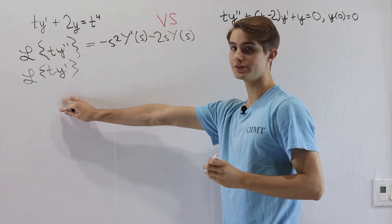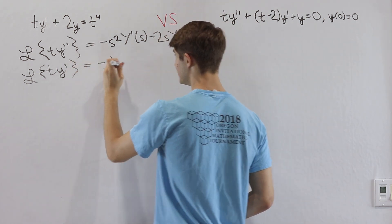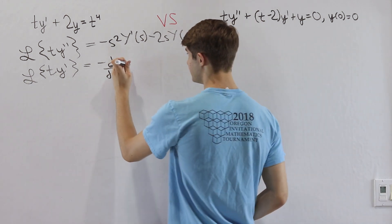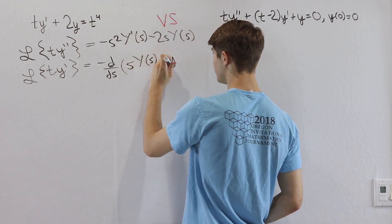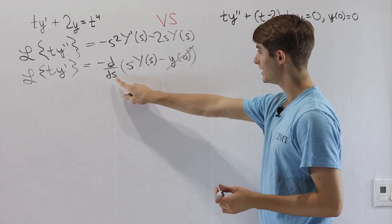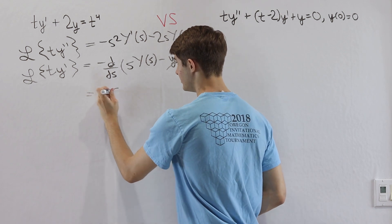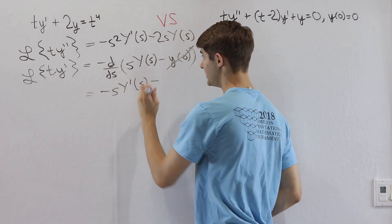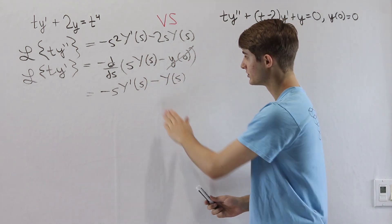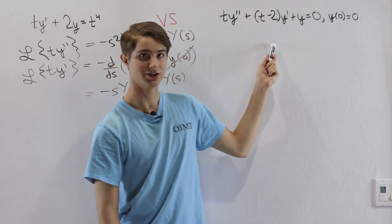Next we need the Laplace transform of t times y prime. This similarly equals negative the derivative with respect to s of the Laplace transform of y prime, which is s times Y of s minus y of 0. Since y of 0 equals 0, we just differentiate s times Y of s. By the product rule that gives us negative s times Y prime of s minus Y of s.